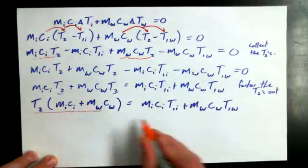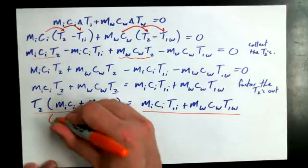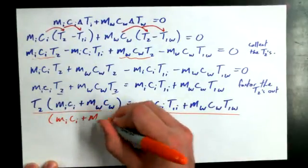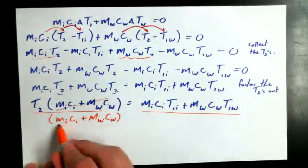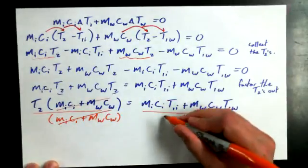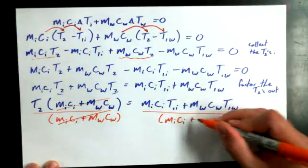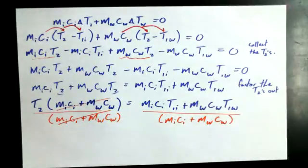It is not against the rules to do this. I can divide both sides by a binomial. To get T2 all by itself, I can divide both sides by this binomial, M-I-C-I plus M-W-C-W. And those guys would cancel out. And on this side, I get the binomial left over in the denominator, M-I-C-I plus M-W-C-W.